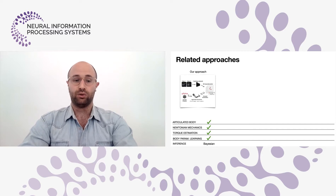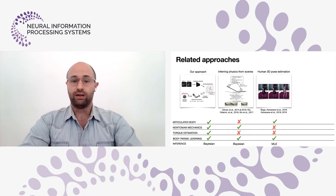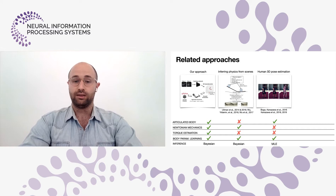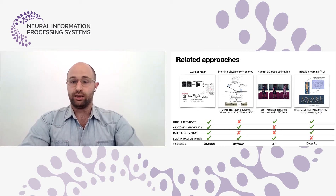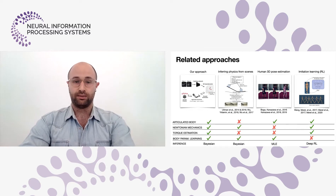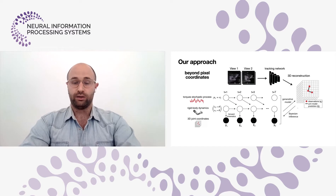We drew inspiration from other cool work. One line of work tracks non-articulated bodies and models their motion using Newtonian mechanics and approximate Bayesian inference. Another line of work fits articulated body models either on a frame-by-frame basis or using a simple constant velocity dynamics model with no notion of torques and mechanics. Or an imitation learning line of work that uses articulated bodies with mechanics and torques, but usually the body model is assumed to be fixed.